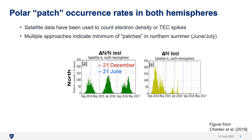Satellite data have been used to count electron density or TEC spikes to get polar cap patch occurrence rates in both hemispheres. Multiple different approaches have indicated minima in the northern hemisphere summer, including the two shown here. The delta N over N test requires that the spike is larger than some multiple of the background, usually more than double. The delta N test requires simply that the spike is larger than some absolute value — in this case 4 TEC units. Both approaches show a minimum around the June solstice, and the delta N test also shows solar cycle variability where the ionization level decreased between 2014 and 2017.